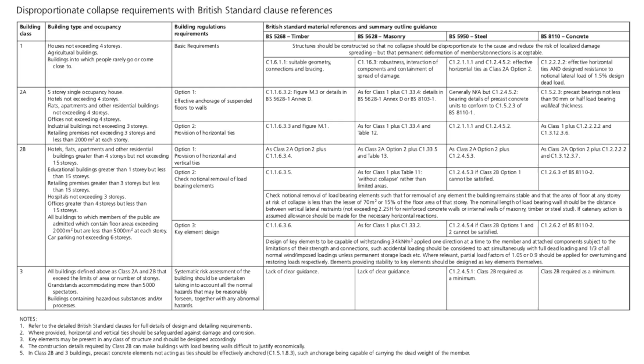If you have the red pocketbook, there are a few pages on disproportionate collapse in there so feel free to have a look. A building is classified differently based on the type and also the height of the building — so a residential building which is 20 storeys high is going to be different to an educational building which is two storeys high. Disproportionate collapse is also dealt with slightly differently depending on the construction material used.